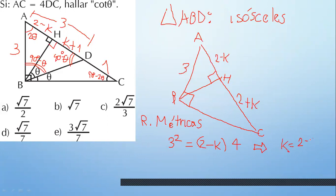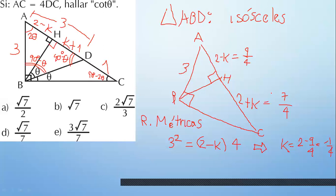K es menos un cuarto. Si lo reemplazas: 1 menos un cuarto es 3 cuartos. 2 menos un cuarto es 7 cuartos. 7 más 9 es 16, entre 4 te da 4. Hasta ya podías hallar este lado: 4 al cuadrado menos 3 al cuadrado es diferencia de cuadrados, que te daría raíz de 7. Ese también era otra forma de hallarlo.